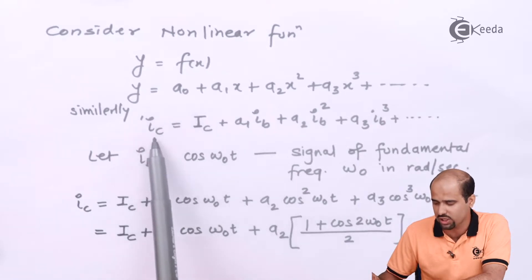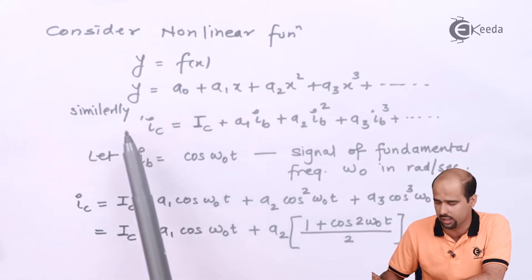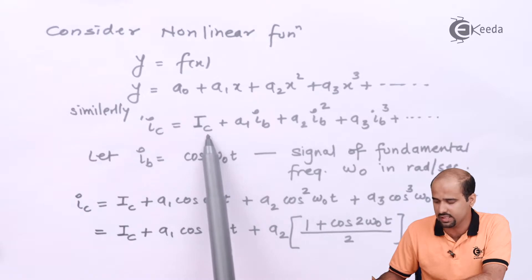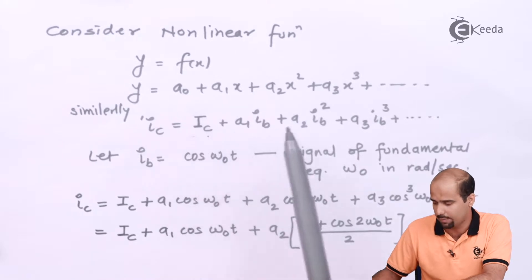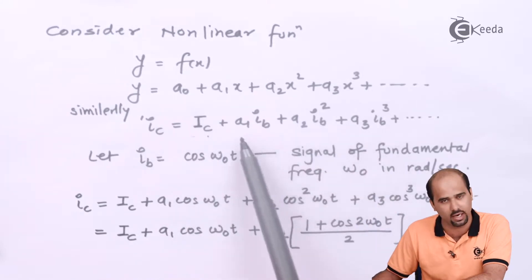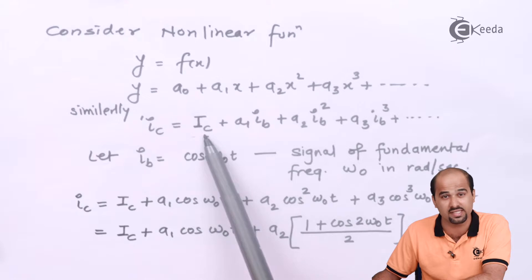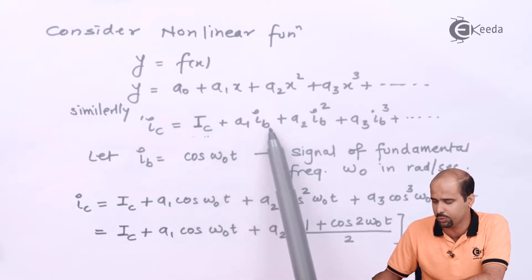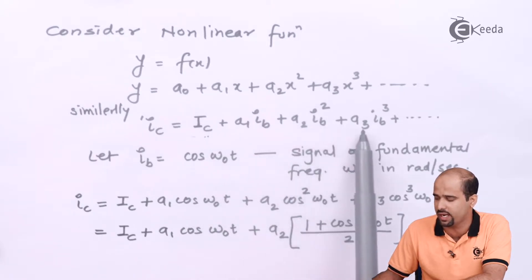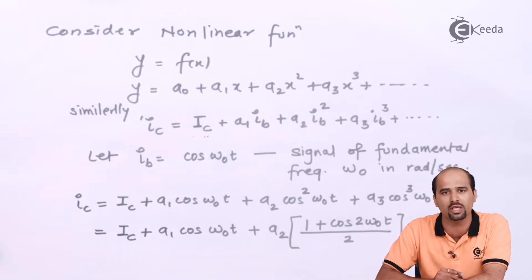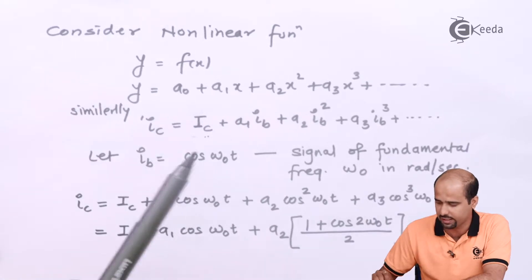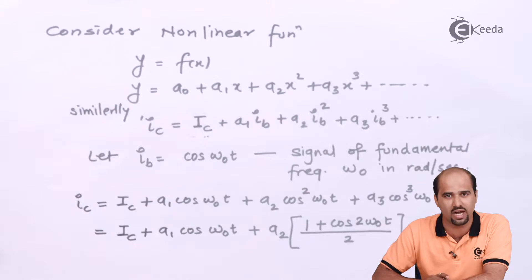When talking about IC as the AC current, the DC current is the reference Q-point current, and on the basis of that I am forming the AC current. So IC (capitalized, the total) equals DC IC plus A1·IB plus A2·IB² plus A3·IB³ and so on — I am adding all the harmonics of IC in the form of IB.